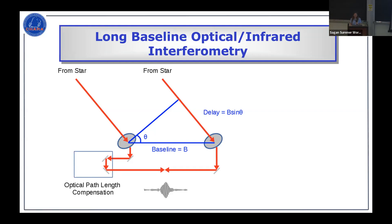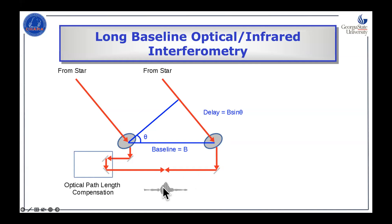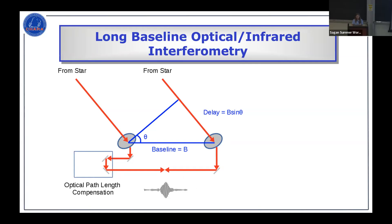Yesterday, Roxanne gave an introduction to interferometry, so just as a quick recap: basically with interferometry, you have two or more telescopes looking at the same stars. The light from the star comes in, hits two separate telescopes, and you bring the light together to form interference fringes. This allows you to achieve higher resolution than just a single telescope.